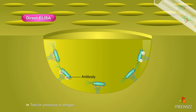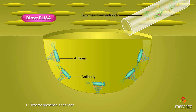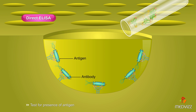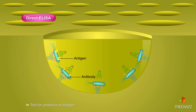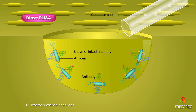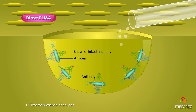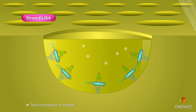Next, an enzyme linked antibody that can react with the antigen is added. If antigen is present in the well, the enzyme linked antibody binds to it and is retained. The colorless substrate for the enzyme is then added. Development of color indicates the presence of the antigen.